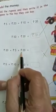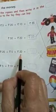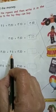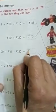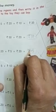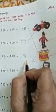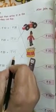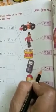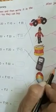Now rupees 20 plus rupees 5 plus rupees 20. 20 plus 20 is 40, and 40 plus 5 is 45. So we will write here rupees 45. You also do this page in your math book and write it properly. Now the cost of 45 rupees is this one — we will match it with this. The cost of this toy is rupees 45.